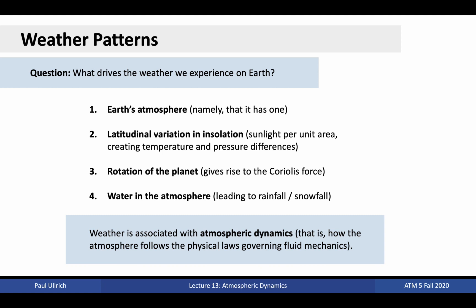Third, rotation of the planet plays a big role in driving differences in weather across latitudes. Rotation of the planet gives rise to Coriolis force, which directs air parcels to the right in the northern hemisphere, and to the left in the southern hemisphere. This in turn produces large weather systems known as extratropical cyclones that dominate weather in the mid-latitudes. Fourth, water in the atmosphere is key to the water cycle, driving precipitation in the form of snowfall or rainfall. Weather patterns carry water from over the ocean to land, or from moister equatorial latitudes poleward. The movement of air in the atmosphere gives rise to weather. The study of the motion of the air and the physical principles giving rise to that motion is referred to as atmospheric dynamics.